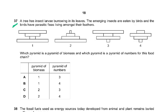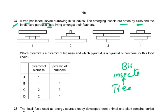Question 37: a tree has insect larvae burrowing in its leaves. The emerging insects are eaten by birds. The birds have fleas living amongst their feathers. The food chain is: tree → insects → birds → fleas. The question asks which pyramid is a pyramid of biomass and which is a pyramid of numbers for this food chain.